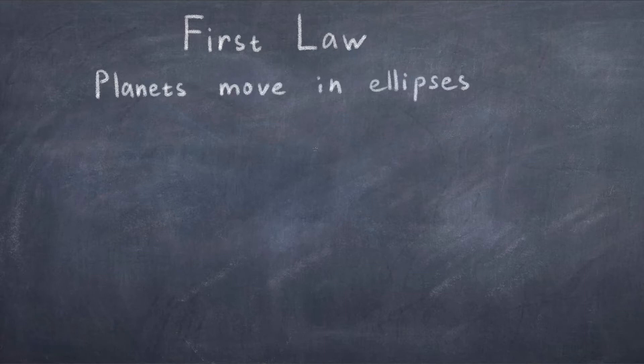Let's start with the first law and break it down. The statement is, the orbit of a planet is an ellipse with the sun at one of its two focus points. Kepler was the first to realize that planets orbit in ellipses and not in circles.